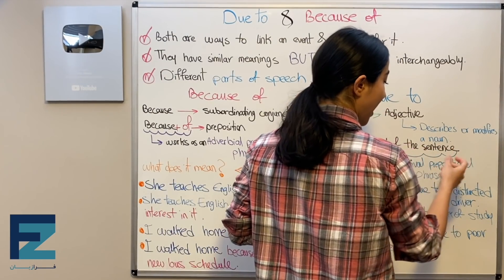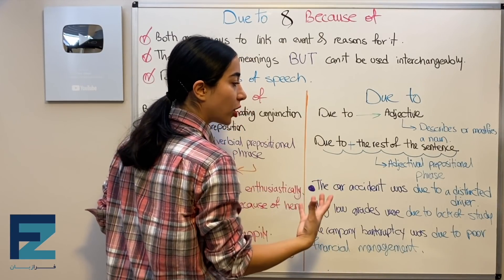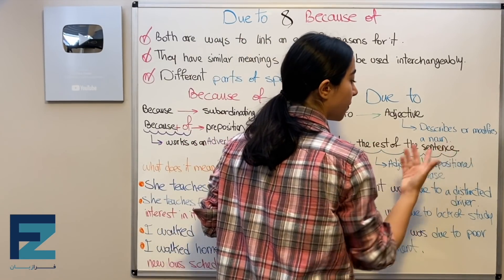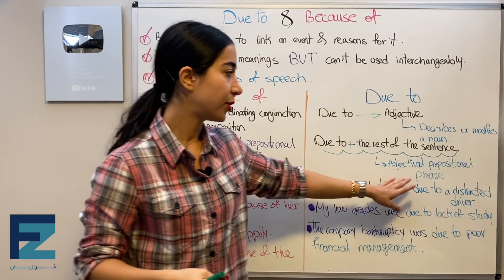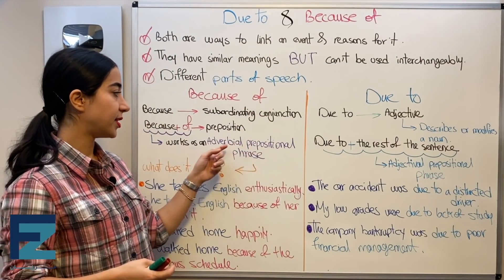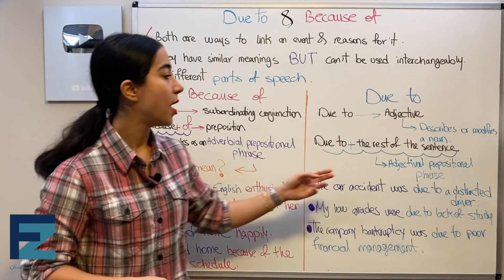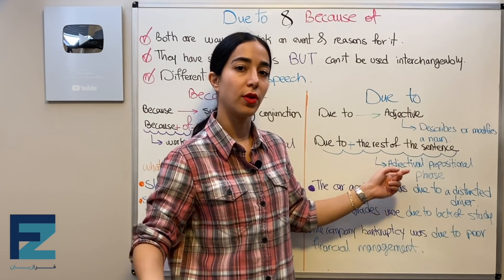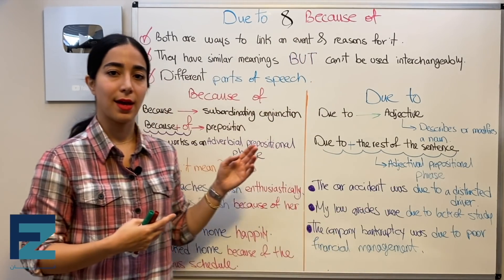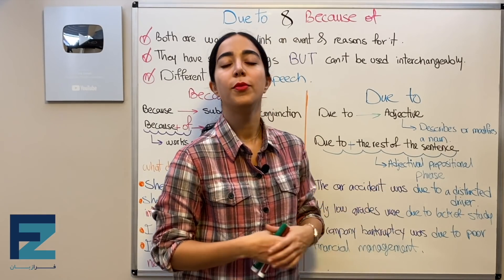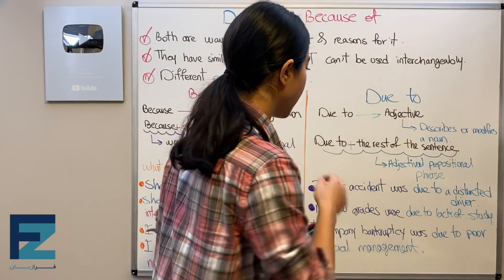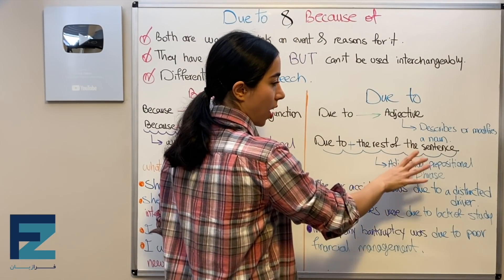'Due to' plus the rest of the sentence functions or works as an adjectival prepositional phrase. Note: where 'because of' acts like an adverb, here 'due to' acts like an adjective — modifying a noun. You can also call it an adjective prepositional phrase or adverb prepositional phrase, both are fine.